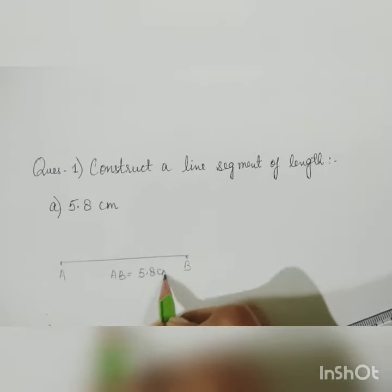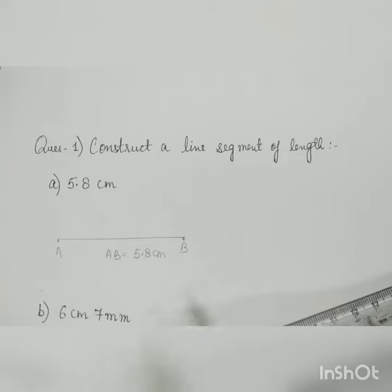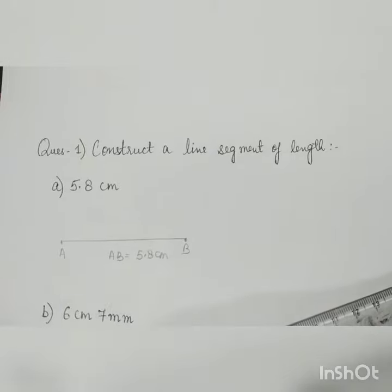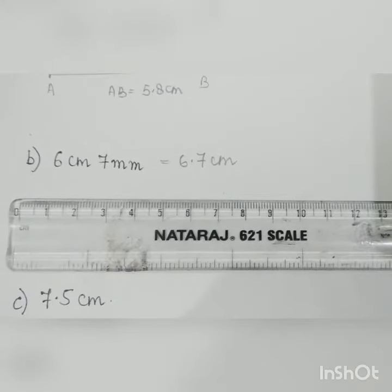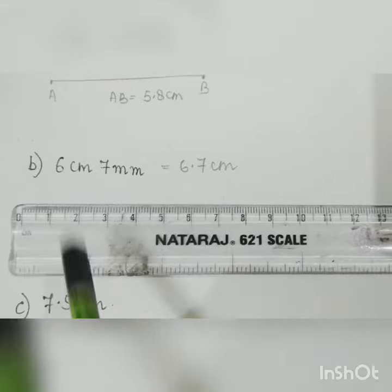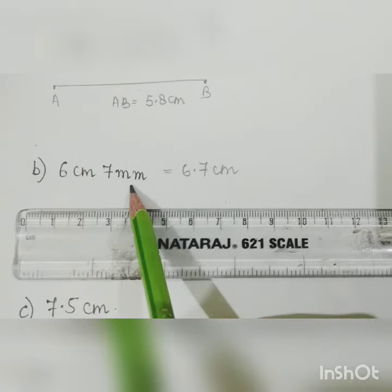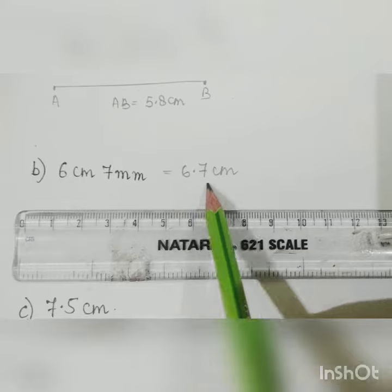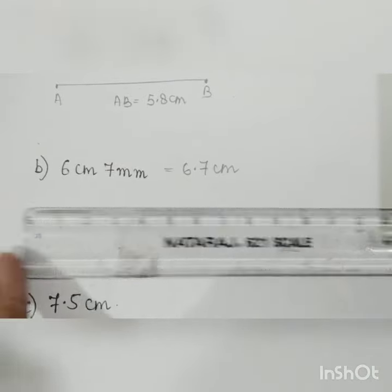In this part you have to draw a line of 6 centimeter and 7 mm, or you can say 6.7 centimeter. See, from this scale from 0 we will count this 6 and we will take 7 digit here.